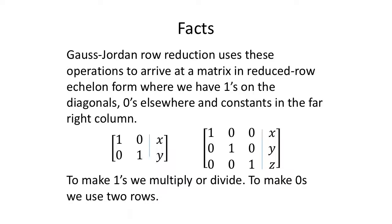There's this thing called Gauss-Jordan row reduction. Gauss was a German mathematician, I want to say the 18th century. Jordan, I believe, was an English mathematician. He made an improvement on Gauss' method. Gauss-Jordan row reduction uses the three previous operations to arrive at a matrix in reduced row echelon form, where we have ones on the diagonals and zeros elsewhere.